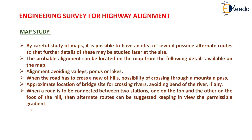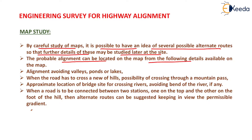The first one is map study. By careful study of maps, it is possible to have an idea of several possible alternate routes so that further details of these may be studied later at the site. The probable alignment can be located on the map from the following details available on the map — that is, alignment avoiding valleys, ponds or lakes, known as obstructions.